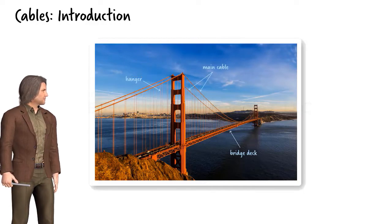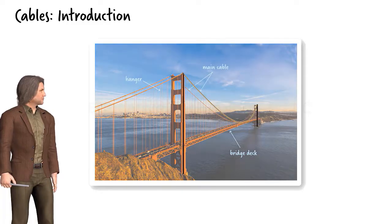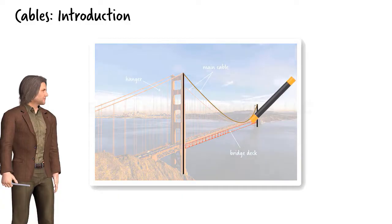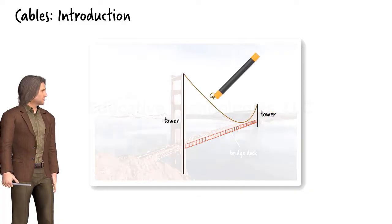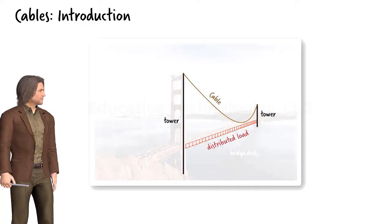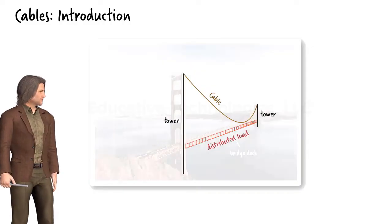This arrangement allows most of the bridge load to be transferred to the main cables, which in turn transfer the load to the towers located at the ends of the bridge. Given the close proximity of the hangers, we can assume that the main cables are being subjected to a distributed load. Furthermore, since the weight of each cable is insignificant compared to the load it must carry, we can neglect the cable's own weight when analysing the system.